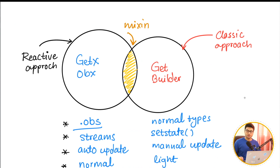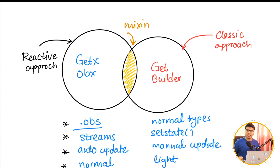There are two approaches to state management: the classic approach on the right-hand side and the reactive approach on the left. GetBuilder works with the classic approach — it works with setState. Whatever widget you wrap inside GetBuilder, it implements a stateful widget behind the scenes. You just call the update method and it manages everything like a stateful widget, without you having to write setState yourself.